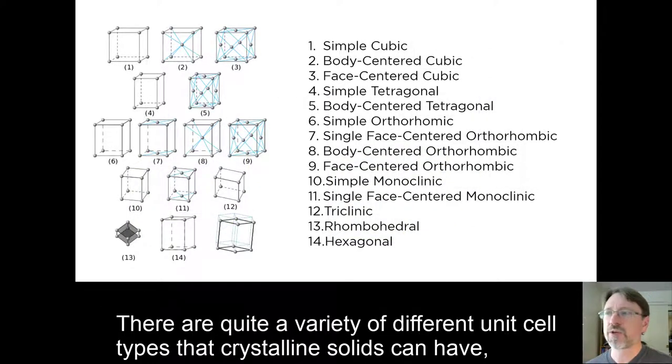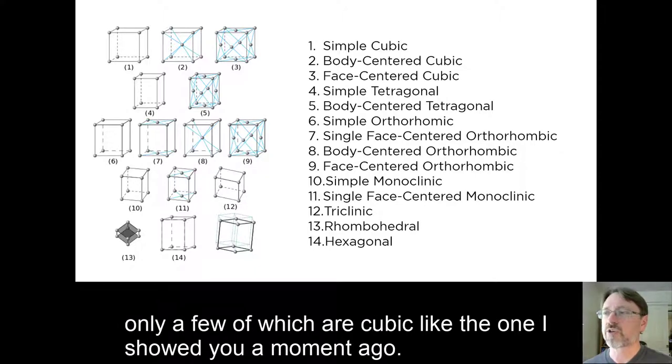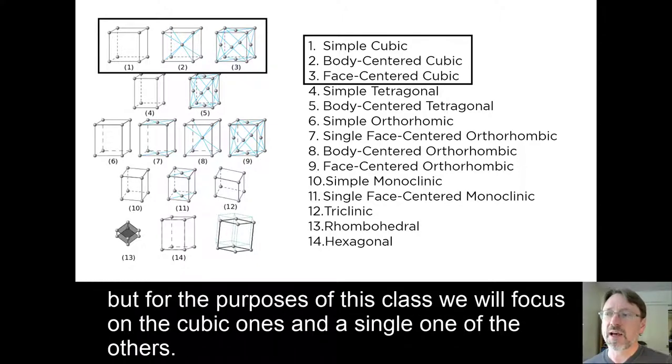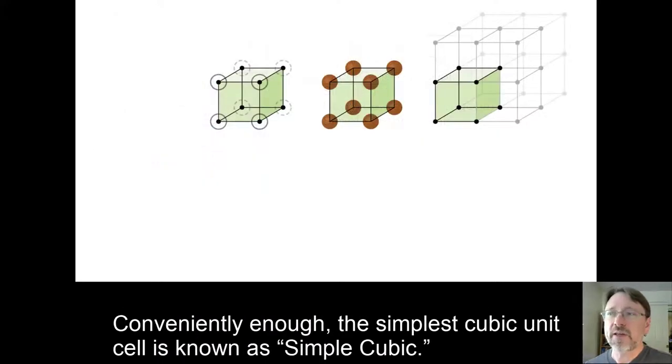There are quite a variety of different unit cell types that crystalline solids can have, only a few of which are cubic, like the one I showed you a moment ago. If you delve deeper into inorganic chemistry, you will study many of the others. But for the purposes of this class, we will focus on the cubic ones and a single one of the others.